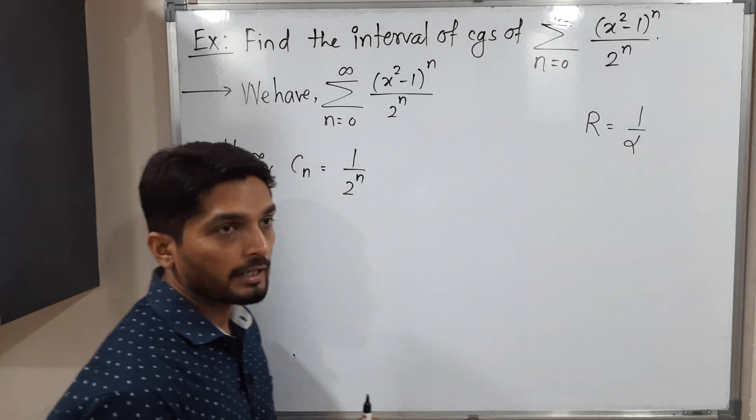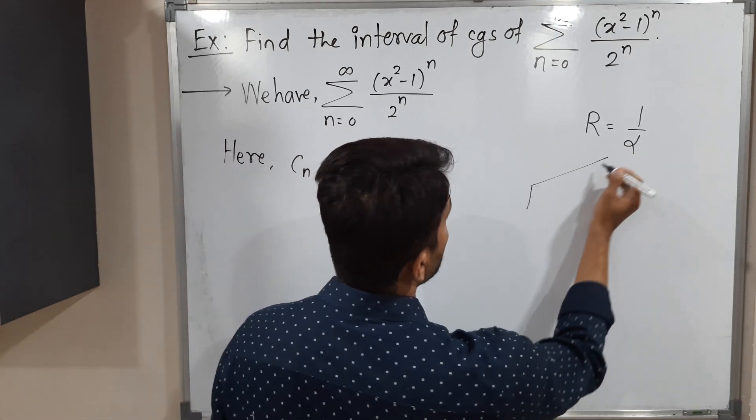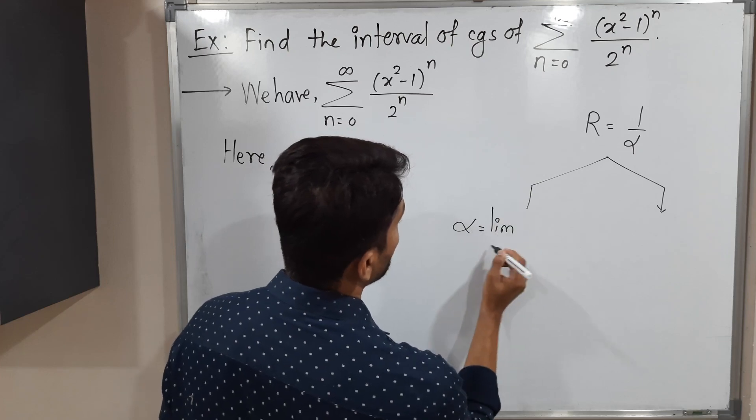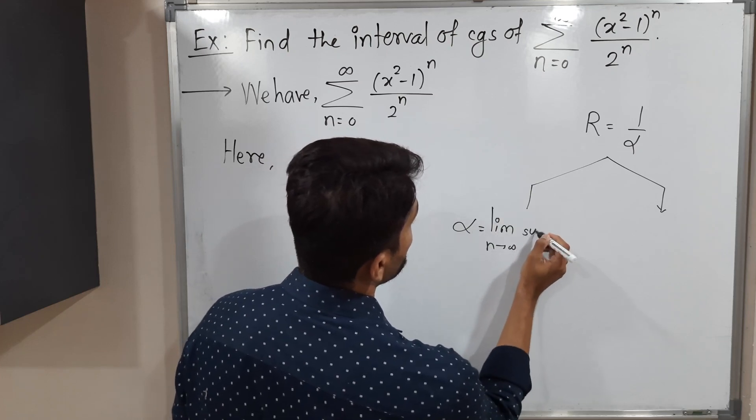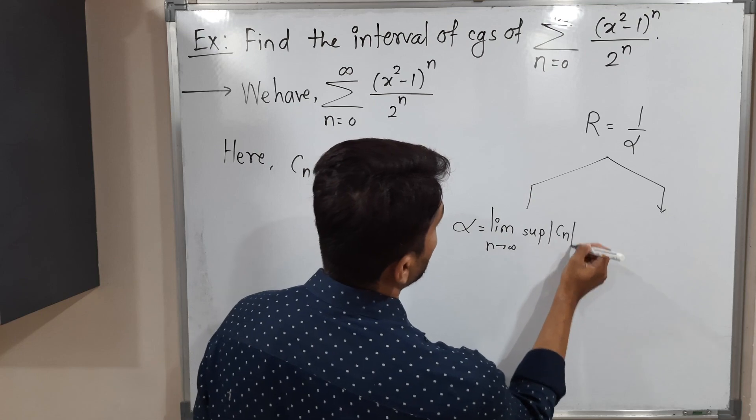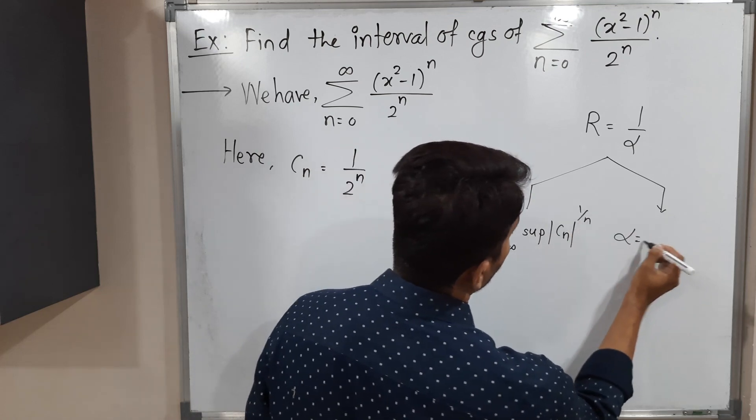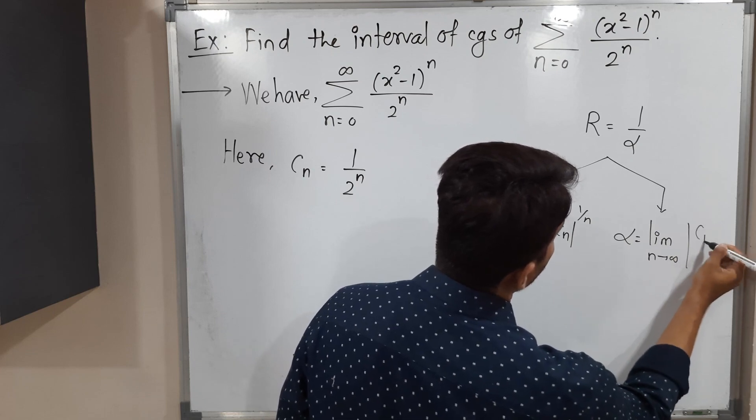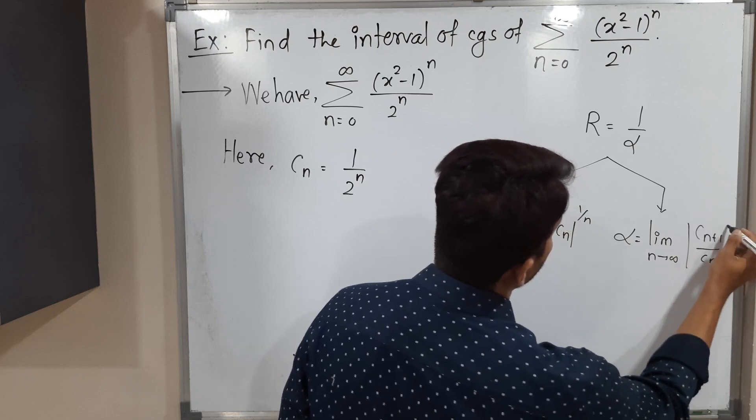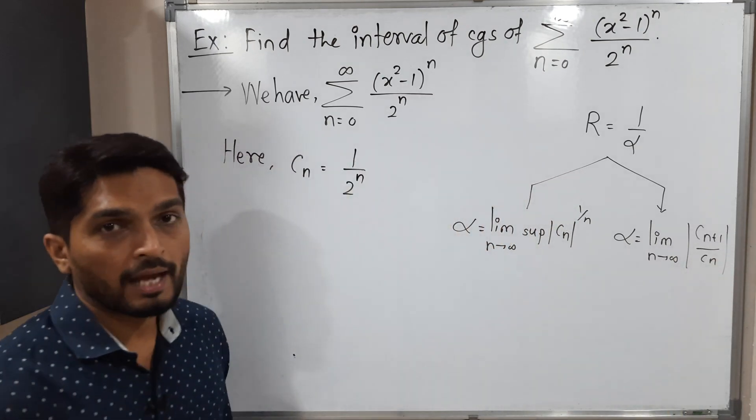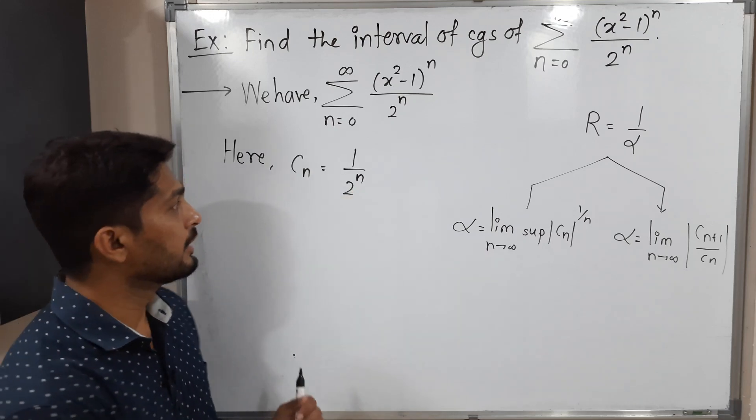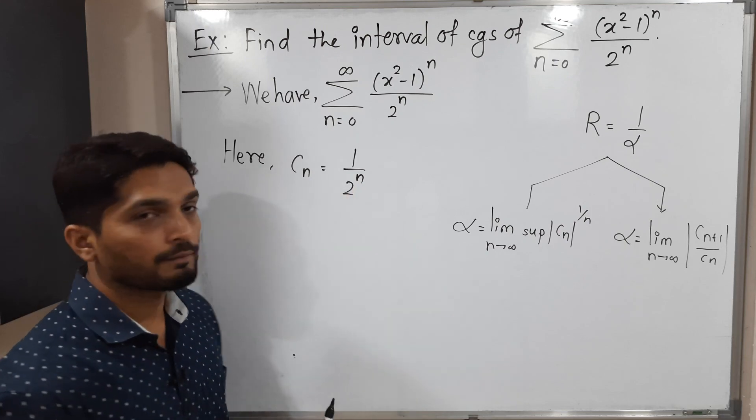α has two distinct formulas. α equals limit as n tends to infinity of the supremum of |cn|^(1/n), and the second formula is limit as n tends to infinity of |cn+1|/|cn|. Generally when we have n in a power, we go for the first formula; otherwise we go for the second formula. So here we have n in power, so I will go for the first formula.